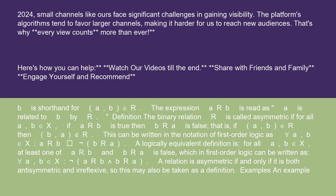b is shorthand for (a, b) ∈ R. The expression a R b is read as 'a is related to b by R.' Definition: the binary relation R is called asymmetric if for all a, b ∈ X, if a R b is true, then b R a is false.